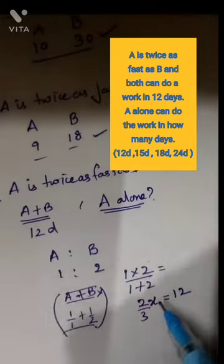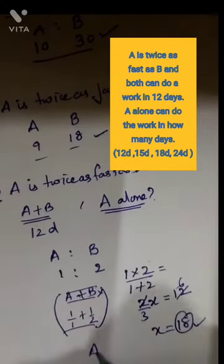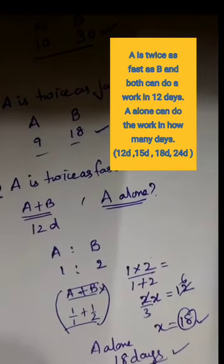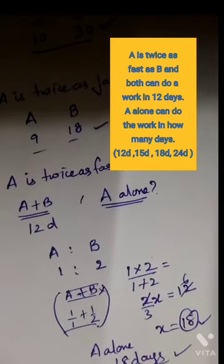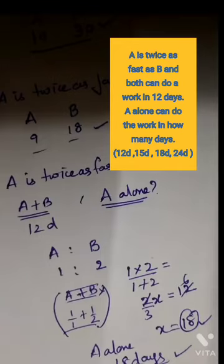A and B working together complete the work in 12 days. So 2/3 X equals 12, which gives X equal to 18 days. A alone can do the work in 18 days. That is the final answer. To recap: A is twice as fast as B gives ratio 1 is to 2. Using the shortcut 1 into 2 by 1 plus 2 equals 2/3 X equal to 12, therefore X equals 18. A alone will do it in 18 days.